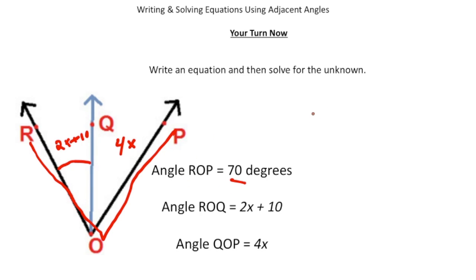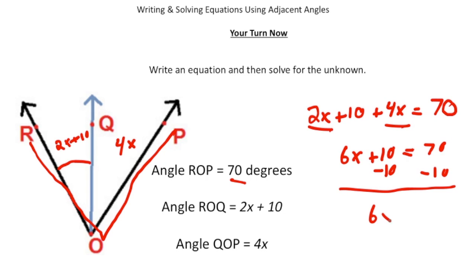So our equation is going to be 2X plus 10 plus 4X equals 70. Now it's just a matter of solving for X. So 2X and 4X is 6X plus 10 equals 70. I'm going to remove the constant, take away 10, take away 10. So we get 6X equals 60. Divide by 6, divide by 6, and X equals 10.